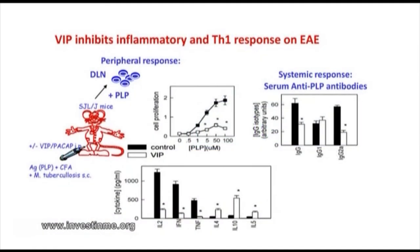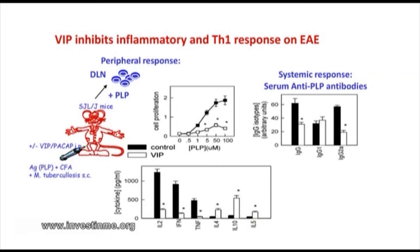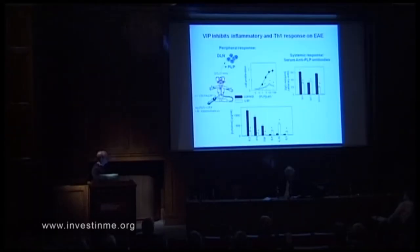Looking at the auto-reactive component: this is mediated by Th1 T-cells. Taking draining lymph nodes from treated or untreated animals and stimulating with the autoantigen, you can see that in untreated controls, self-reactive T-cells proliferate, producing a typical Th1 response, and there is a high number of autoantibodies — mainly of the isotype characteristic of Th1 — in the serum. Animals treated with VIP have no auto-reactive T-cells, do not produce Th1 cytokines, and show a reduced number of autoantibodies.